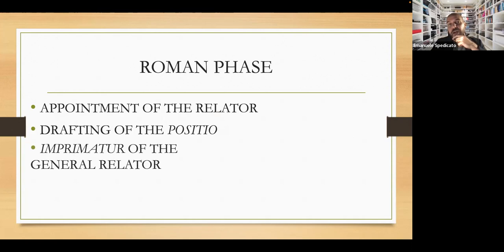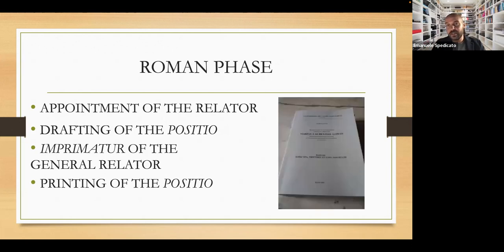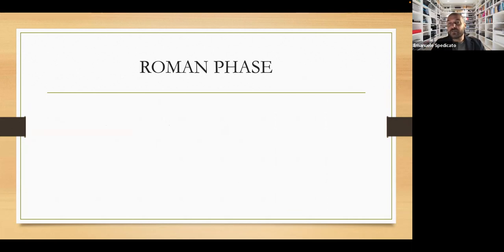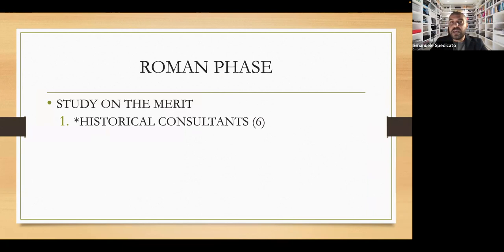Then there is the imprimatur of the general relator. The general relator is the one who oversees all the relators, and he gives his nihil obstat. He says, okay, the Posizio could be printed. And finally, there is the printing of the Posizio, you will see in the picture. And the Posizio is now ready for the study on the merit. You remember, the study on the validity has been done before they have approved the validity, and now we start with the merit, so with the content of the Posizio.